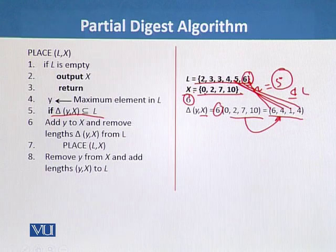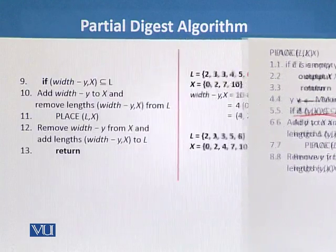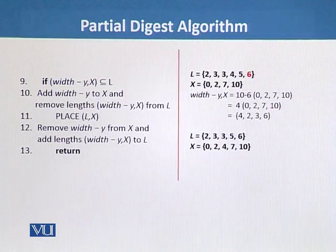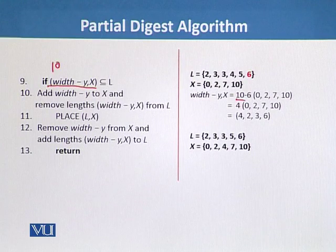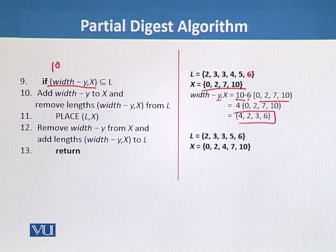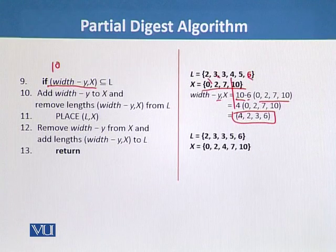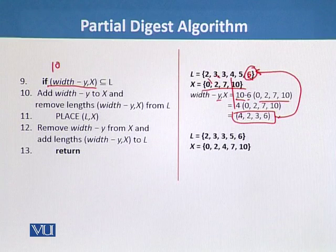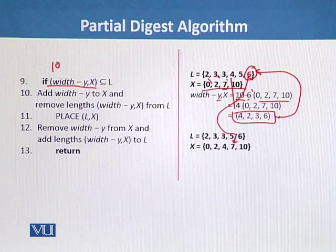Since 6 is not a subset via the first check, we proceed to the next part: we compute width minus Y from X. Width is 10, Y is 6, and X is {0, 2, 7, 10}. After calculating we get {4, 2, 3, 6} — all of 4, 2, 3, and 6 are present in L, so this is a subset of L. This means we take the value 4 (which is width minus Y = 10 minus 6) and put it in X. X becomes {0, 2, 4, 7, 10}.